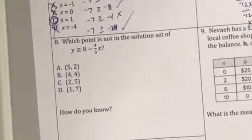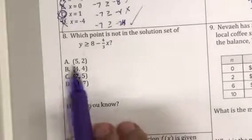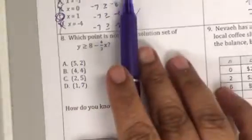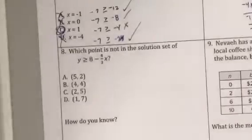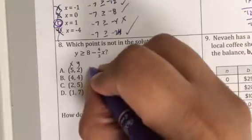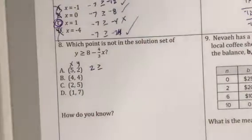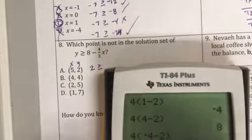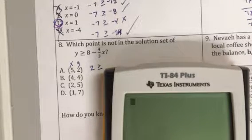Looking at number 8 is actually doing the same thing that we did on this problem, except we're plugging in x and y. Here, I need you to remember that this is x and y. So 2 is greater than or equal to, and I'm going to do the math on my calculator.